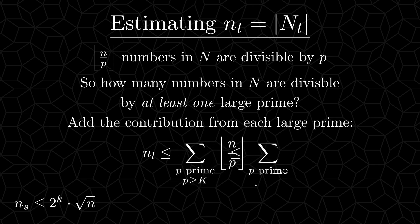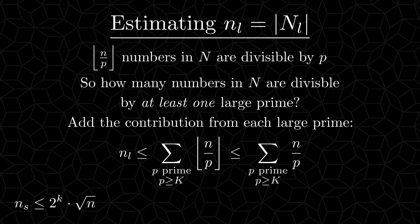And clearly, if we don't round down, the result can't be smaller. Now we can extract a factor N, and do you recognize what's left here? This is exactly the definition of the large primes. This sum is less than a half. We will stick this in the corner together with our other estimation.